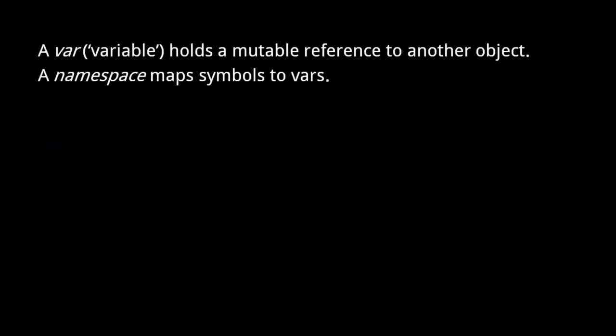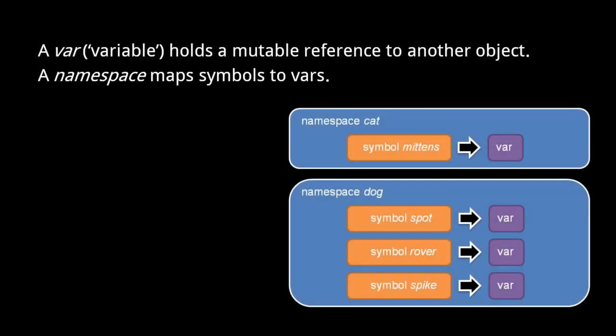Before we can understand how the evaluator processes reader data, we first must understand two more Clojure data types: vars and namespaces. A var, short for variable, simply holds a mutable reference to another object. A namespace is a special kind of map in which the keys are symbols and the values are vars. Unlike the other collections, a namespace is mutable. Each namespace in a Clojure program is known by a unique symbol name. A program's namespaces may contain symbols like cat and dog, with each symbol mapped to a var.